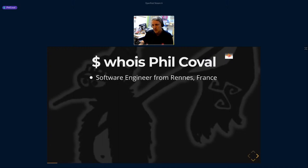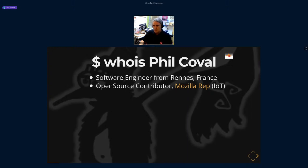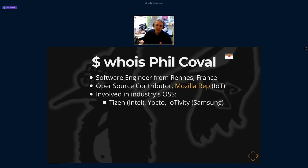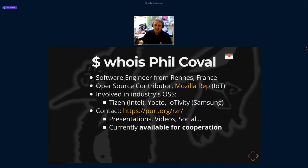Let me introduce myself. I'm Philippe Koval, a software engineer from France based in Brittany. I've been contributing to open source projects for a long time — from Debian, Maemo for cell phones, Tizen, and other Linux systems. I'm currently part of Mozilla's web program working on IoT and VR. I was involved in industry open source projects like Tizen at Intel, Genivi for automotive, and my main contribution at Samsung was the open connectivity reference implementation IoTivity.